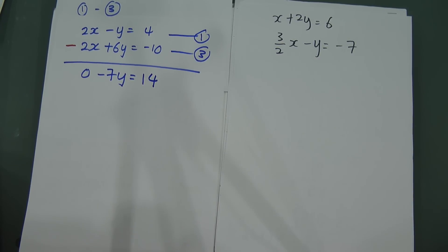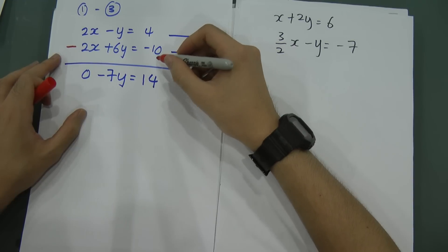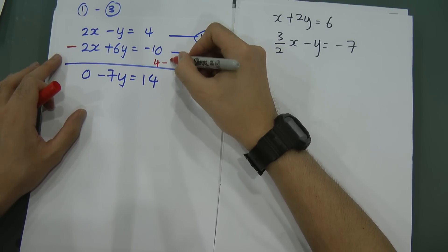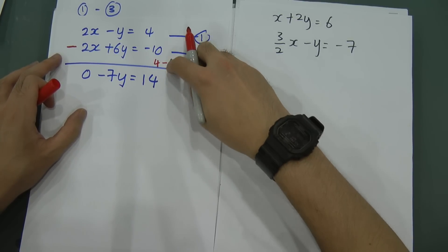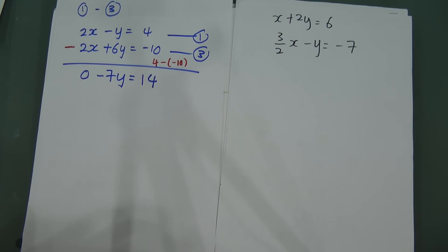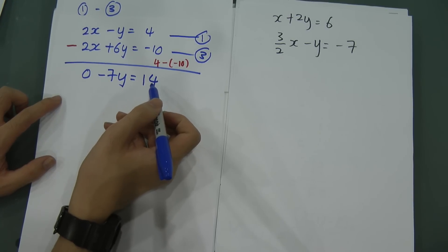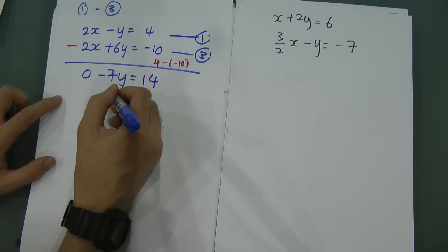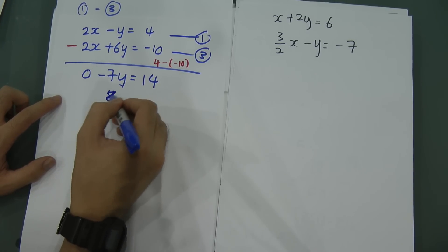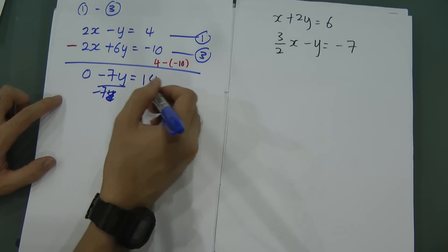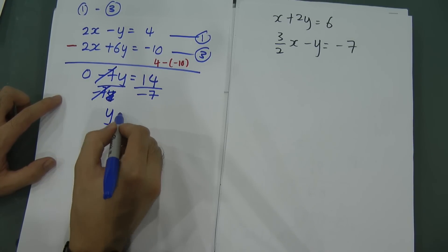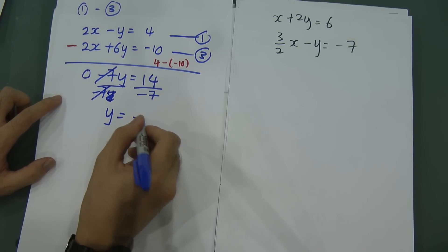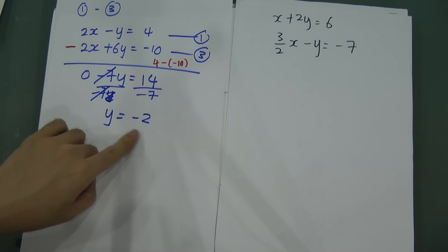So negative 7y equals 14. If you're still confused about 4 minus negative 10: minus negative becomes positive, so it's 4 plus 10 which gives 14. Therefore negative 7y equals 14. To find y, I divide both sides by negative 7, and negative 7 divided by negative 7 leaves y. So 14 divided by negative 7 gives y equal to negative 2.